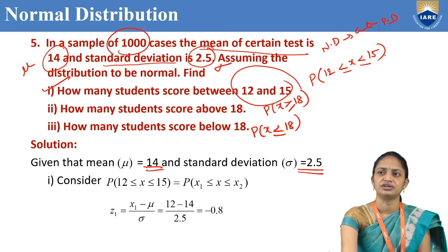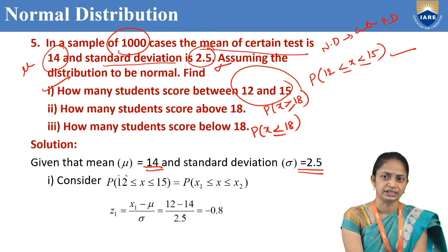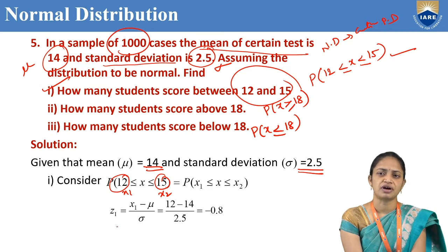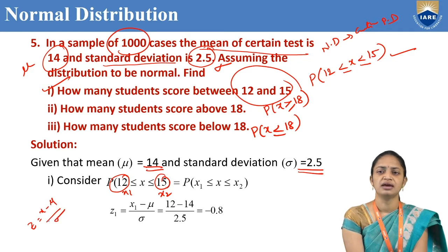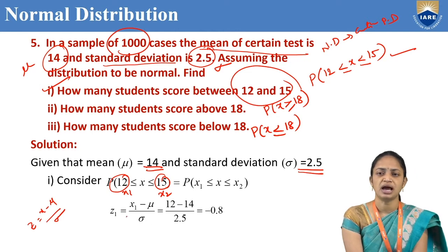Coming to the first question, we need to find probability of 12 less than or equal to x less than or equal to 15. Let x1 = 12 and x2 = 15, so we need probability of x1 less than or equal to x less than or equal to x2. Using the normal distribution formula, z equals x minus mu divided by sigma, so z1 equals x1 minus mu divided by sigma, and z2 equals x2 minus mu divided by sigma.